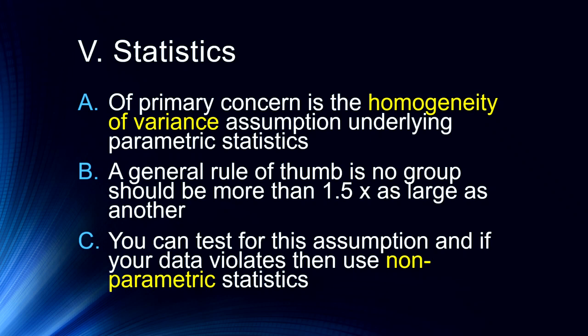So in between-subjects designs, of course, we're doing an independent samples t-test or a between-subjects analysis of variance. We'll get into within and between-subjects and mixed designs here in the next lecture. So just be cautious when you're doing between-subjects design and make sure you're testing for that homogeneity of variance assumption underlying those parametric statistics because it's a really important part of having robust, well-established data.